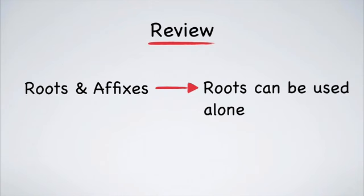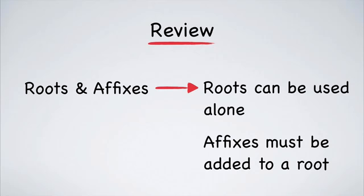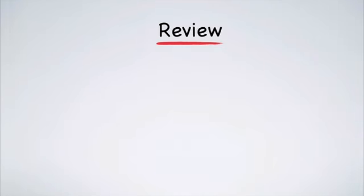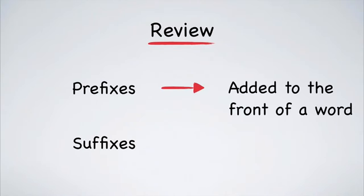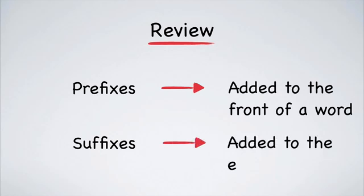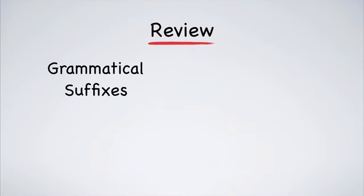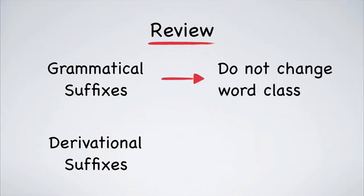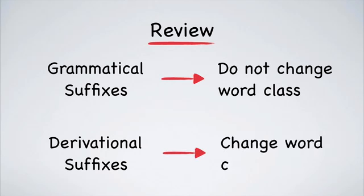There are two types of affixes: prefixes and suffixes. Prefixes are added to the beginning of a word, and suffixes are added to the end. Again, there are two types of suffixes: grammatical and derivational. Grammatical affixes do not change the class of a word. Derivational suffixes, on the other hand, do change the word's class.